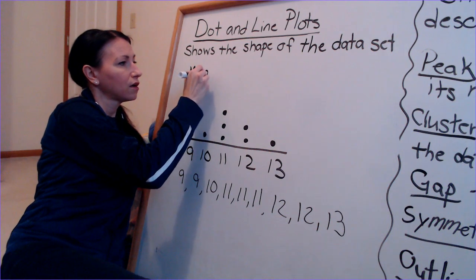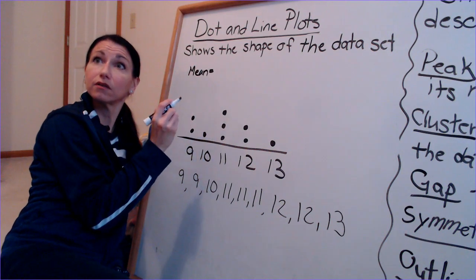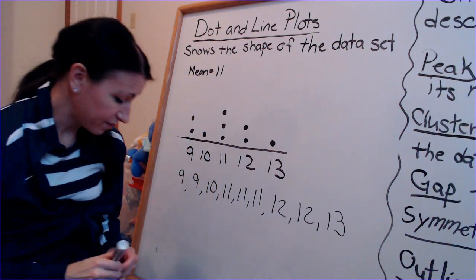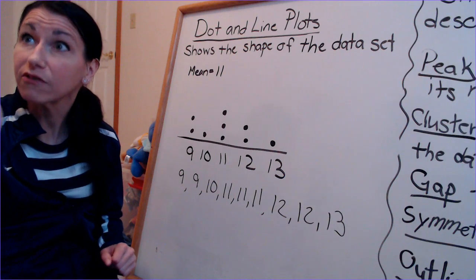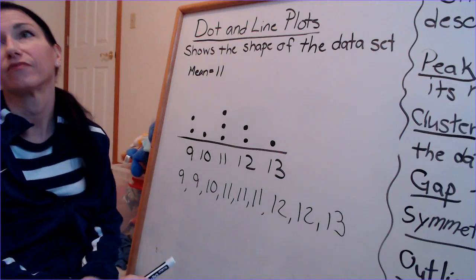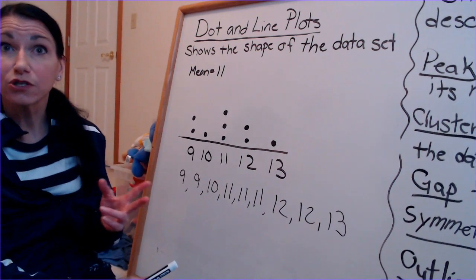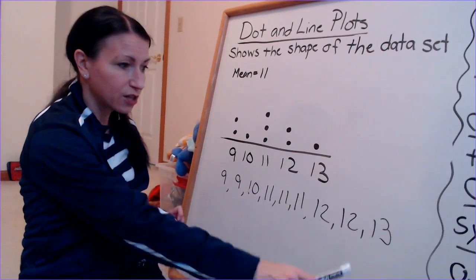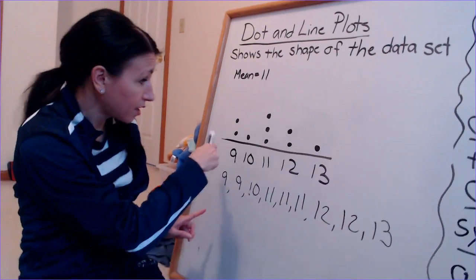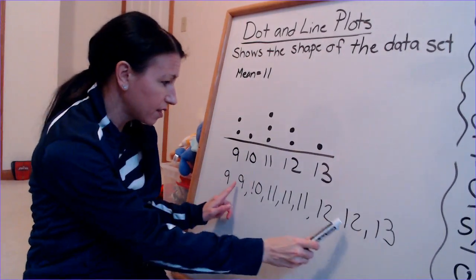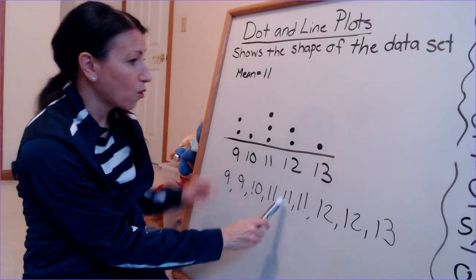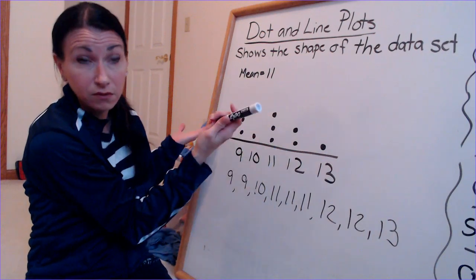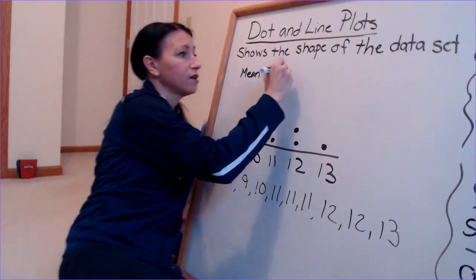10.8 is closer to 11. For the median — the good thing is the data is already in order because the number line is in order. I can cross off from each end, and the median is 11.